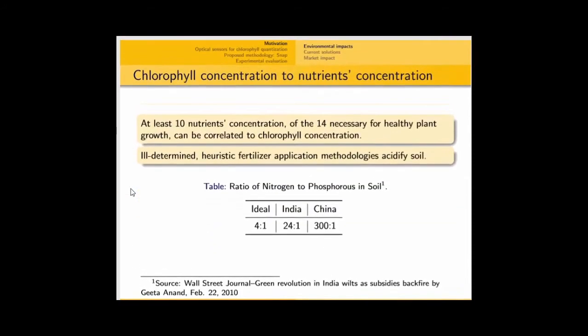So why is chlorophyll concentration determination an interesting problem? Well, as it turns out, at least 10 of the 14 necessary nutrients for healthy plant growth can be determined and directly correlated if one knows the chlorophyll concentration.